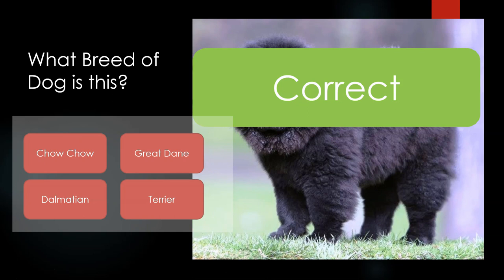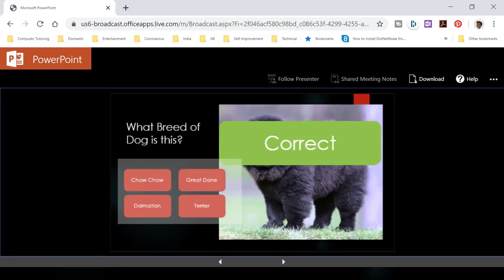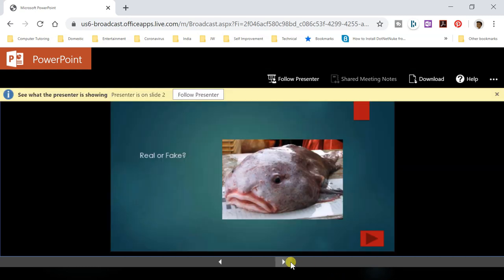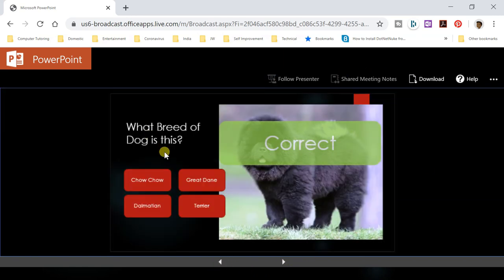That doesn't really work well either. What attendees would have to do is click the Download button at the top and muck around with the file themselves. If they're online they can at least go to other slides. There are shared meeting notes and a 'Follow Presenter' option, so there is some interaction — but not great. The best option is to have them download the file and go through the quiz on their own.